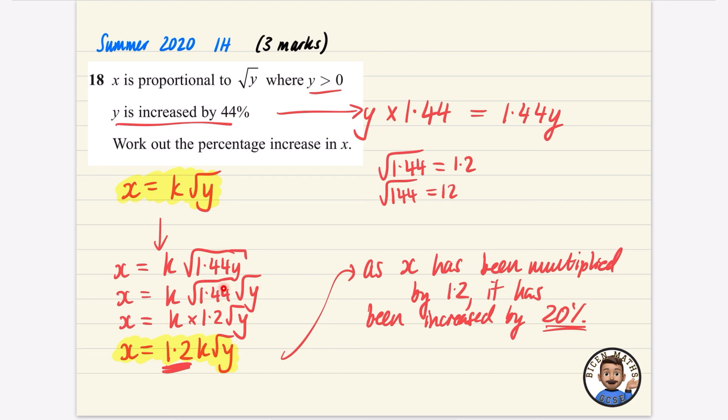And actually this question doesn't have a ton to do with the proportional stuff, does it? It's using your knowledge of surds, the square roots of numbers, and also this relationship between this is what it originally was, and this is what it becomes. So it was originally K root Y, it's been multiplied by 1.2. We know that 1.2 means increased by 20% because obviously 1.2 represents 120%.